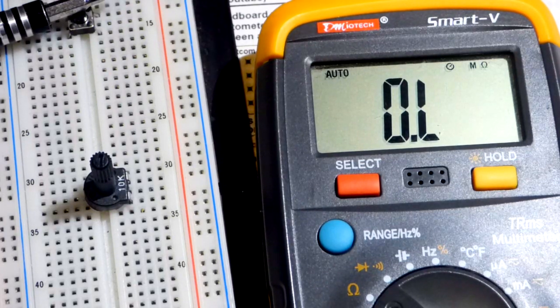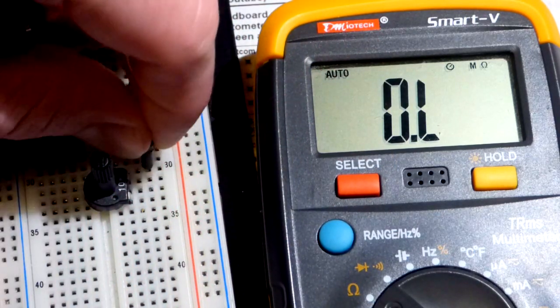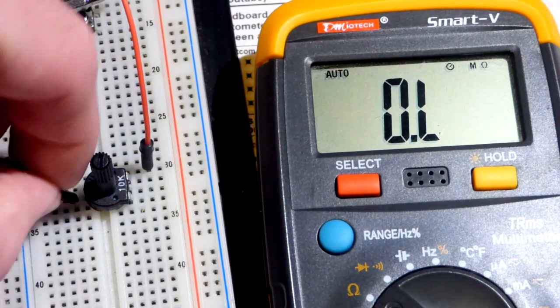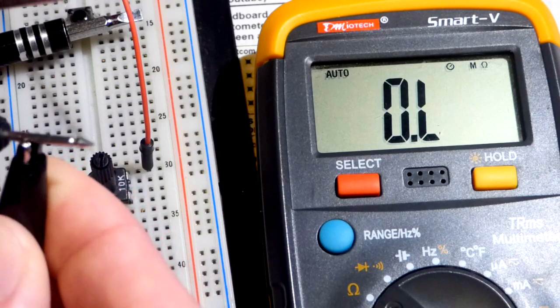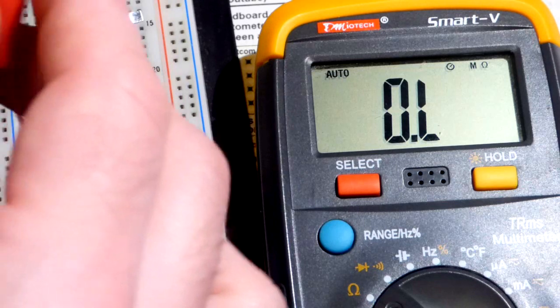And what we're going to do is take these alligator clips. I'm going to clip one to one of the inputs and the other to the output here. And one thing to realize, this trim pot, it doesn't fit into the board perfectly. And sometimes it loses connection. So we'll see that.